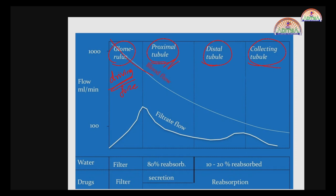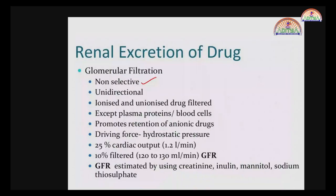Drugs first undergo filtration, and later they undergo reabsorption. Most reabsorption occurs in the proximal tubule, and the remaining fraction is reabsorbed in the more distal part of the nephron. The three steps involved in urine formation are: glomerular filtration, active tubular secretion, and active or passive tubular reabsorption.